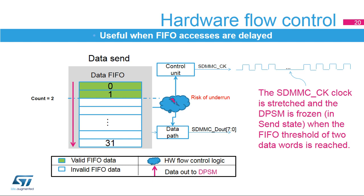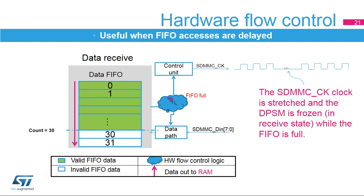The hardware flow control logic stops the SDMMC-CK pin signals and freezes the DPSM when a risk of underrun or overrun is detected. In send state, the SDMMC-CK clock signal is stretched and the DPSM is frozen when the FIFO threshold of two data words is reached. In receive state, the SDMMC-CK clock is stretched and the DPSM is frozen while the FIFO is full. The threshold is 30 words. The clock and DPSM are restarted when the FIFO full flag is deasserted.